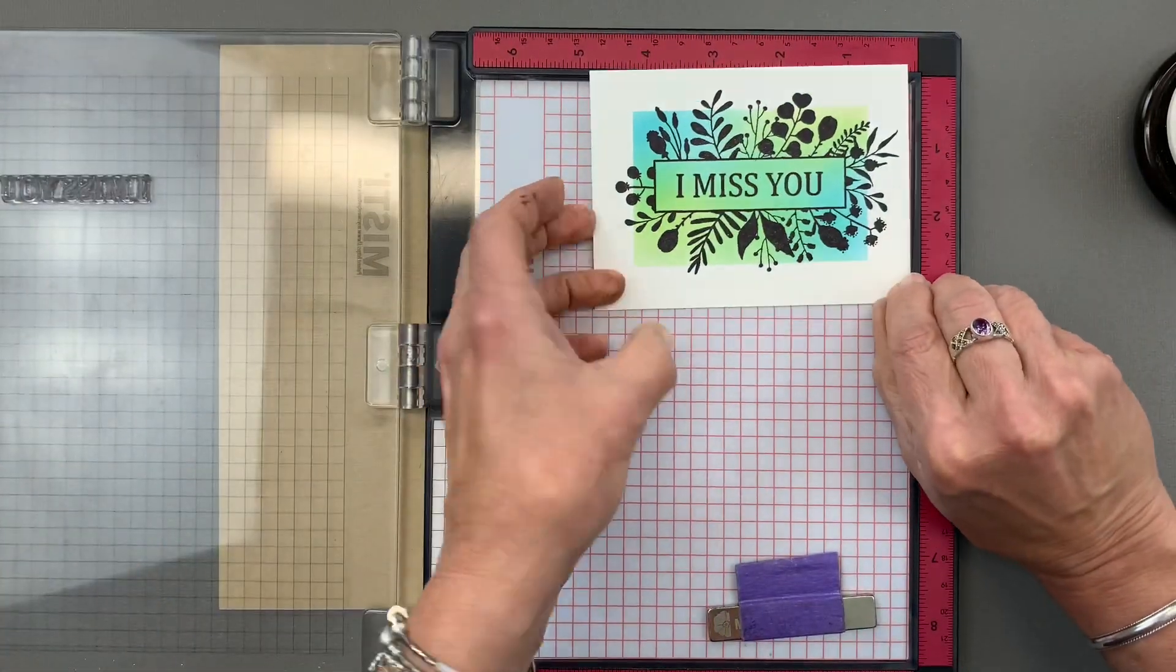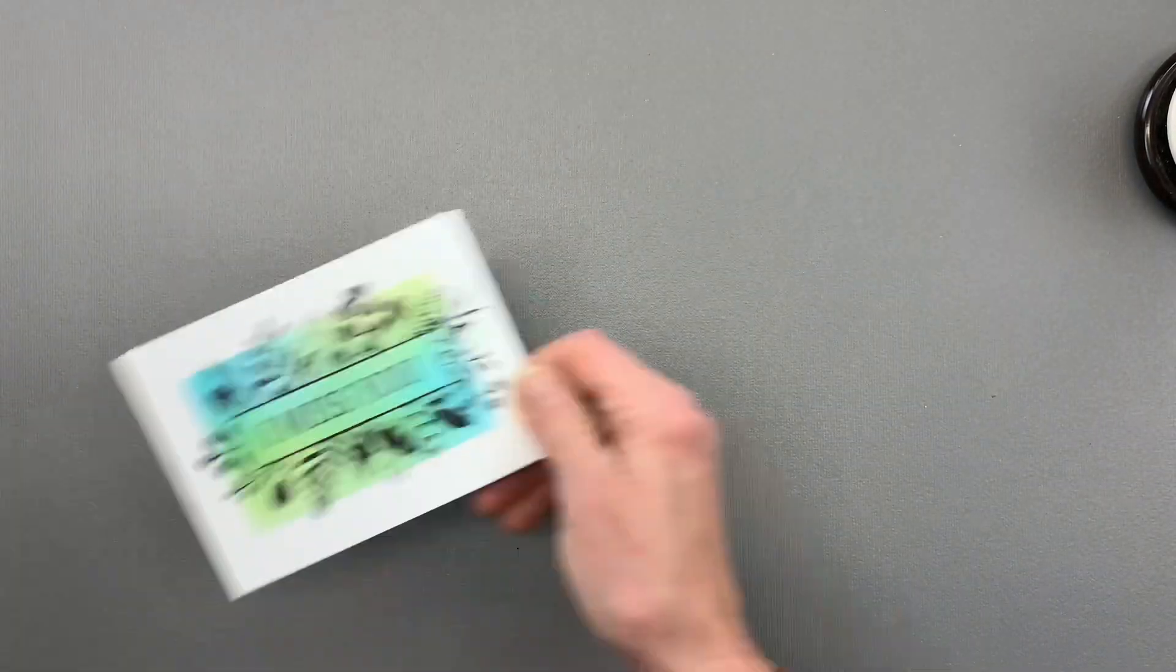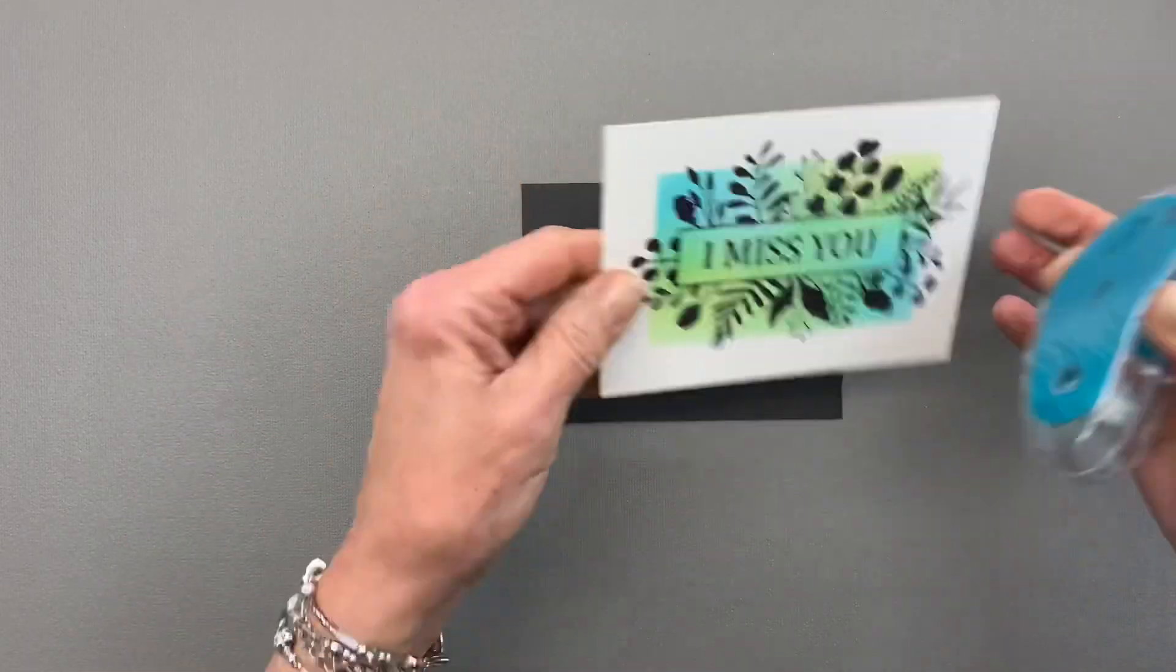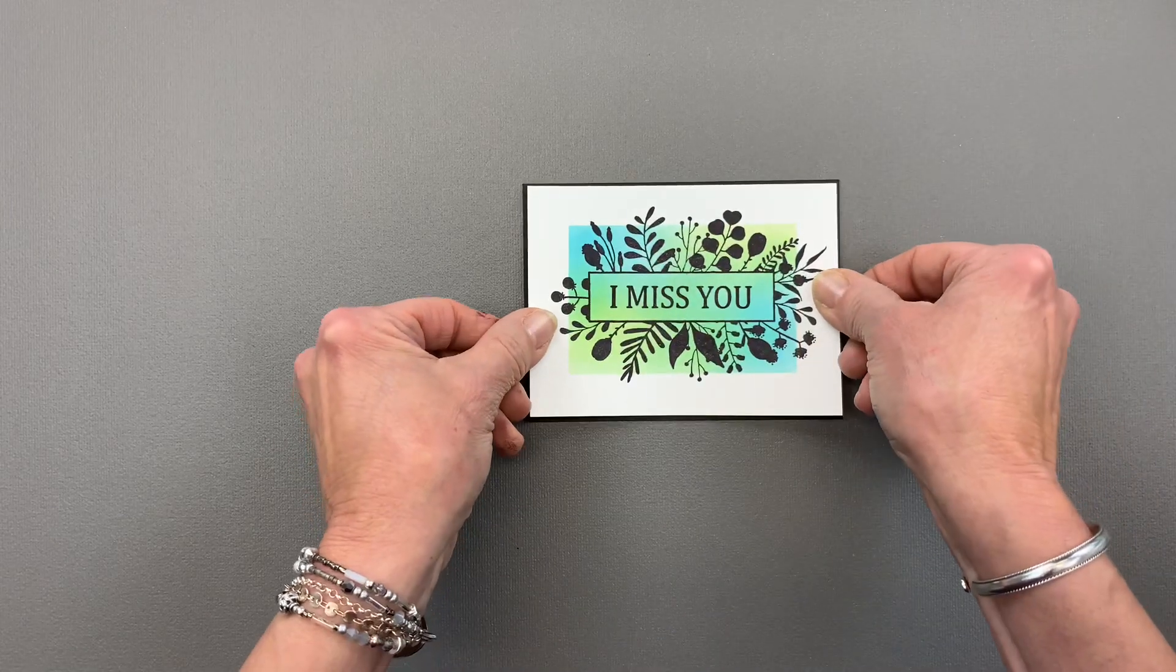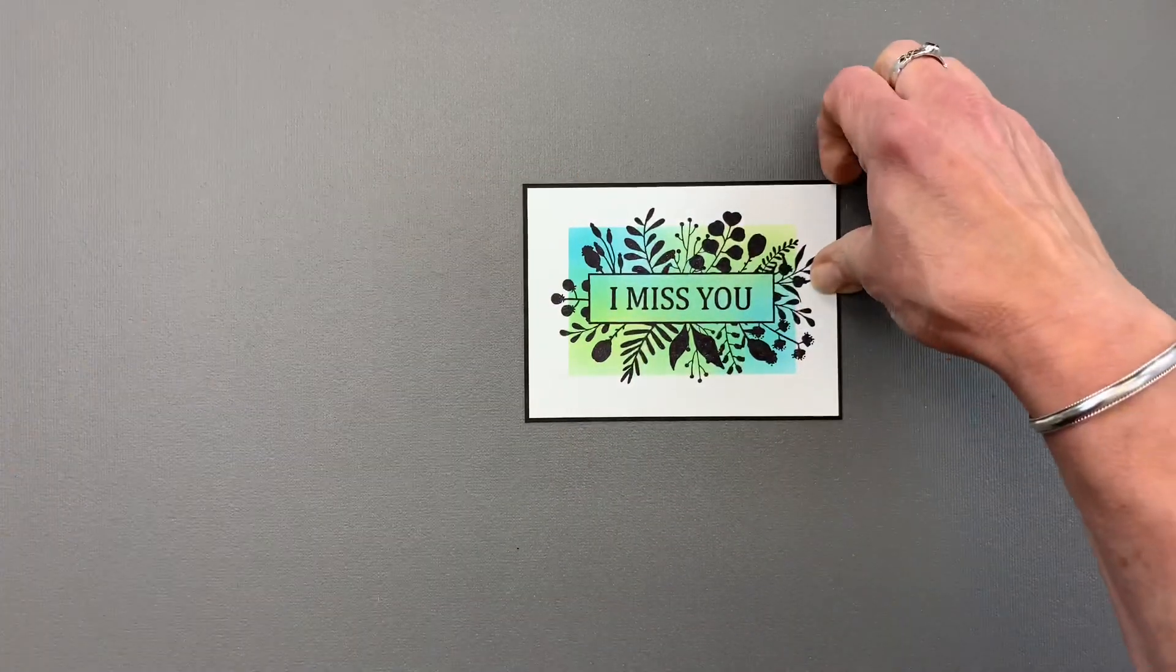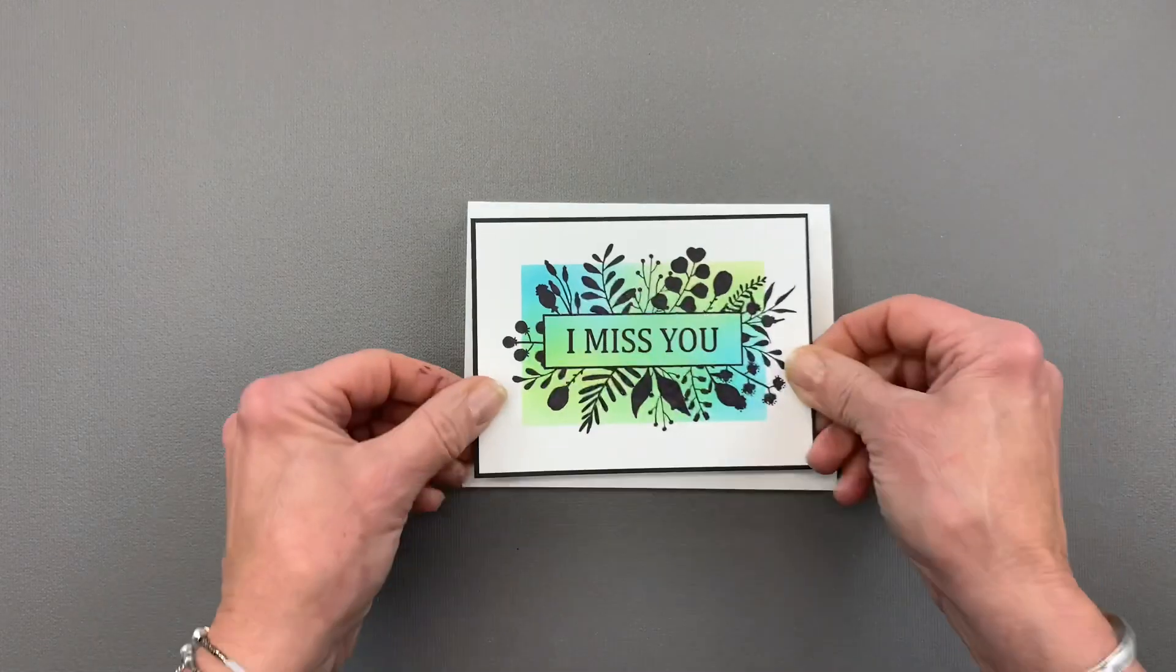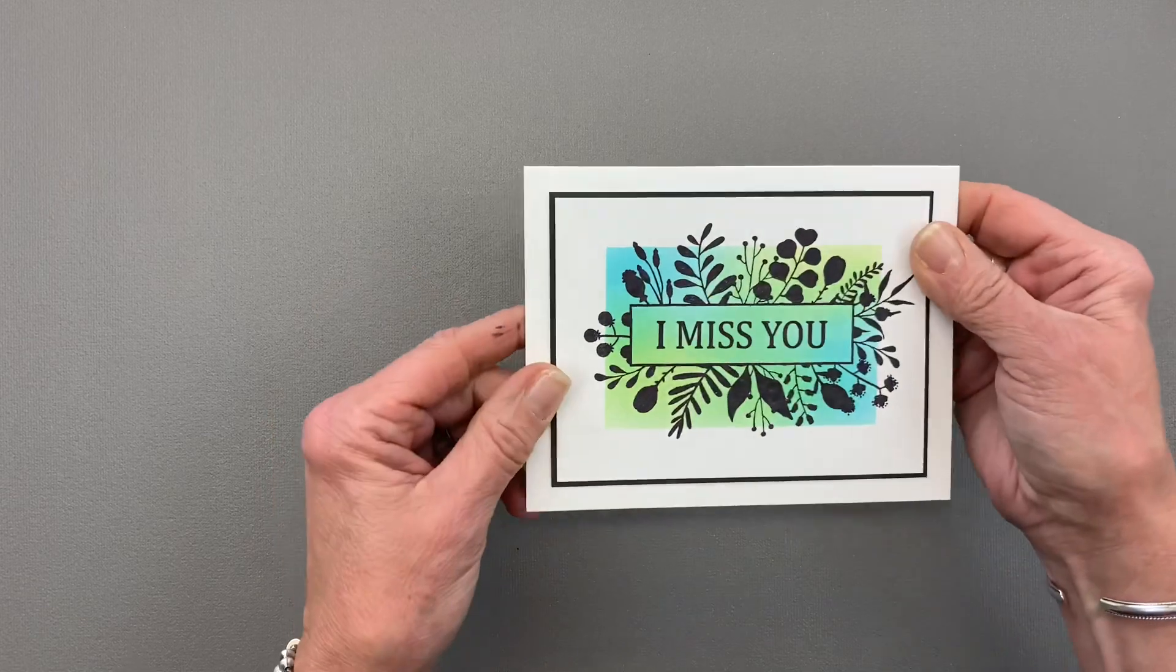Okay, so there we go, now we have our panel. Now the next step is going to be to add this onto a black panel and I'm going to add a little bit of my thermal web tape. Put that right on top. And then this whole panel is going to go onto a white A2 card base. That card base folded measures four and a quarter by five and a half and we'll put that right in the middle and that is a very clean and simple card.